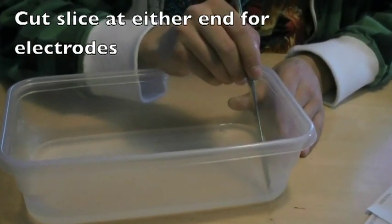Using the butter knife, carefully cut a thin slice from the gel from the top and the bottom to make room for the electrodes.